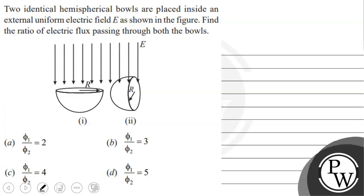Hello, let's read the question. Two identical hemispherical bowls are placed inside a uniform electric field as shown in the figure. Find the ratio of electric flux passing through both the bowls. We will solve this question.